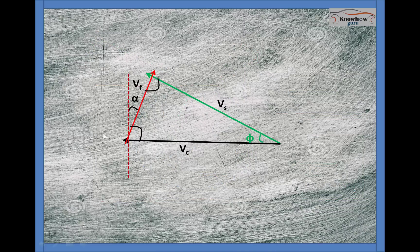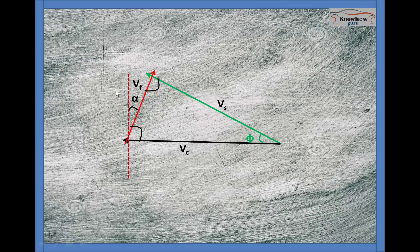So I have replicated same triangle here and I want to calculate the different angles with respect to their cutting velocity or with respect to their velocity component.